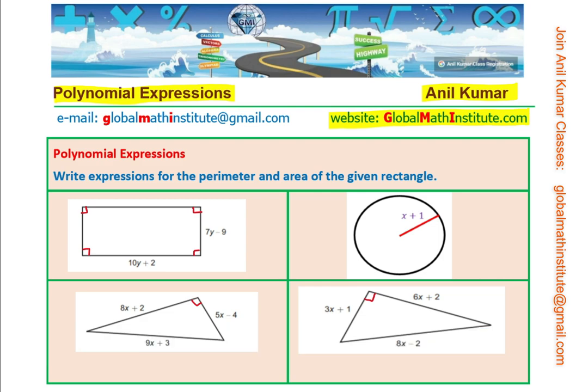You see four figures here: a rectangle, a circle, and two right triangles. The question here is, write expressions for the perimeter and area of the given rectangle.